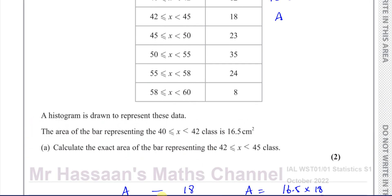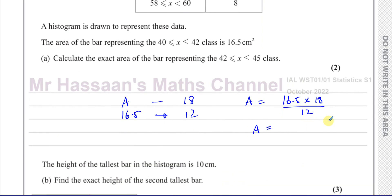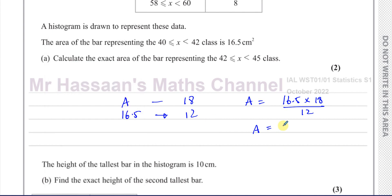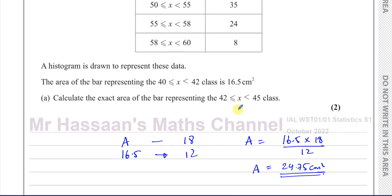Because the frequency is represented by the area of the bar — not by the height of the bar — it's proportional to the area. So we do 16.5 multiplied by 18 over 12, and that gives us 24.75 square centimetres. So there's the answer to part A: the exact area of the bar representing the 42 to 45 class.